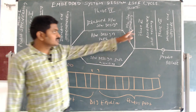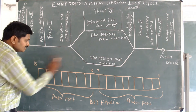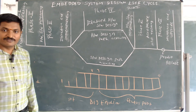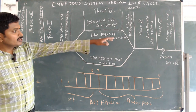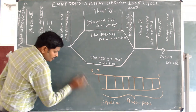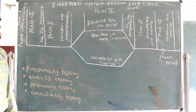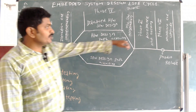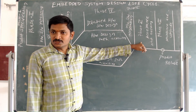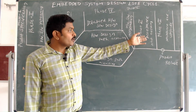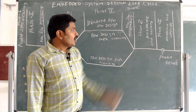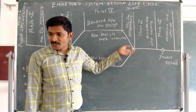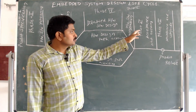Phase six is acceptance and testing. Testing is used to verify that the design product is working properly, and to identify bugs and user issues. In this phase, we also verify whether the product is using resources efficiently or wastefully on unnecessary tasks.